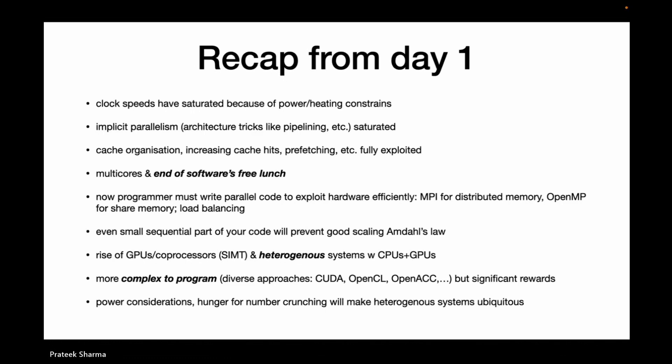The programmer must now write parallel code to exploit the hardware. MPI, OpenMP, and shared memory approaches involve load balancing so that work is uniformly distributed. We also learned about Amdahl's law and strong scaling — even if you have a tiny sequential part of your code, you cannot scale beyond a certain limit. So you want to get rid of sequential portions. Then came the rise of GPUs — that's the next advance.